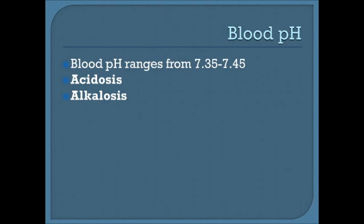Acidosis is a lower blood pH — anything lower than 7.35. When it starts to get under 7, that can cause a coma. Alkalosis is a high blood pH, anything above 7.45. If it starts to get above 7.8, that can result in sustained, uncontrollable muscle contractions, or tetany.